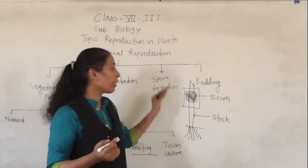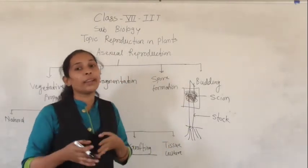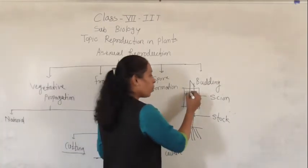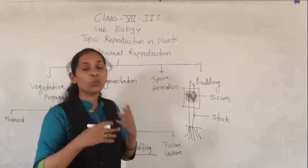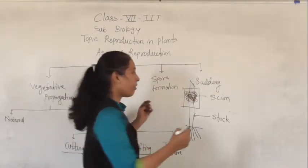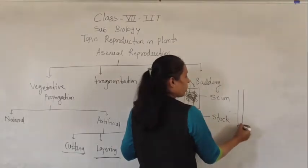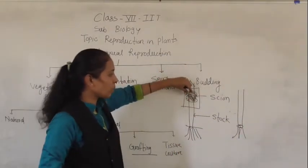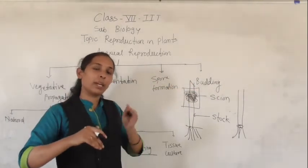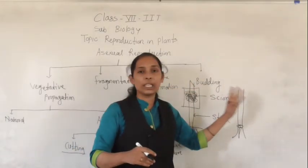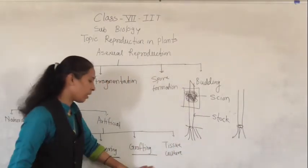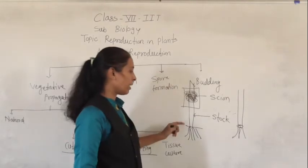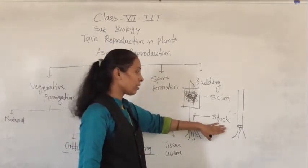We cover with a polythene bag to avoid the entry of water and to avoid infections. After a certain period of time, both sections merge with each other, new cells start to form, and we can see one single rooted plant. The section where we joined the two different plants disappears, and it becomes one single plant. This method is called grafting, where one is the rooted plant called the stock.